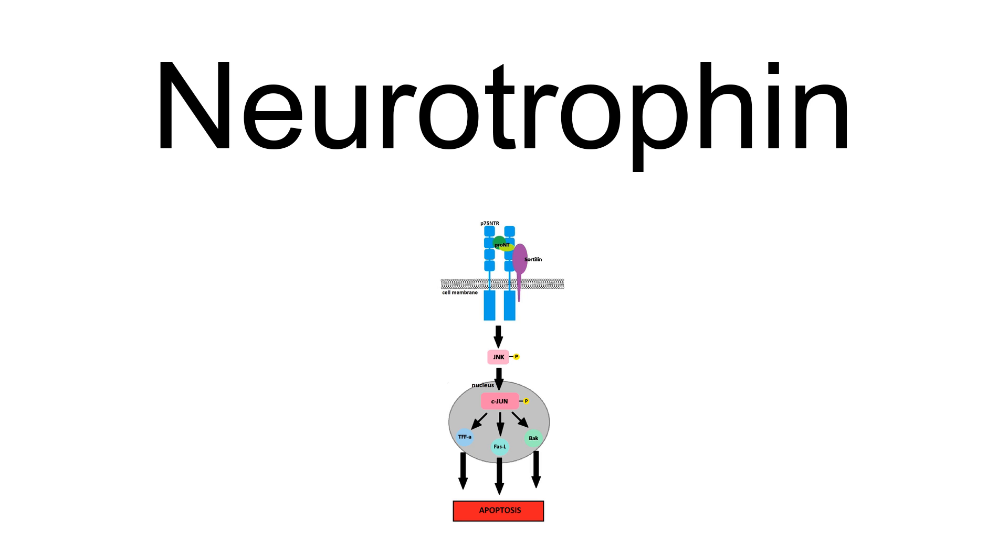Neurotrophins also induce differentiation of progenitor cells to form neurons. Although the vast majority of neurons in the mammalian brain are formed prenatally, parts of the adult brain, for example the hippocampus, retain the ability to grow new neurons from neural stem cells, a process known as neurogenesis. Neurotrophins are chemicals that help to stimulate and control neurogenesis.